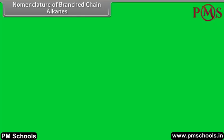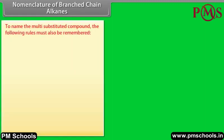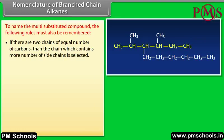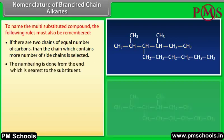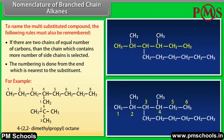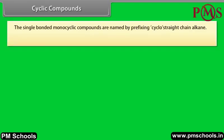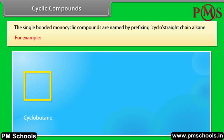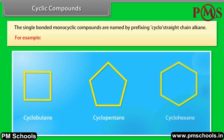To name multi-substituted compounds: if there are two chains of equal number of carbons, the chain which contains more side chains is selected. The numbering is done from the end nearest to the substituent. For example, the IUPAC name of the given compound is 4-(2,2-dimethylpropyl)-octane. Cyclic compounds: single-bonded monocyclic compounds are named by prefixing cyclo to the straight-chain alkane name. For example, cyclobutane, cyclopentane, cyclohexane.